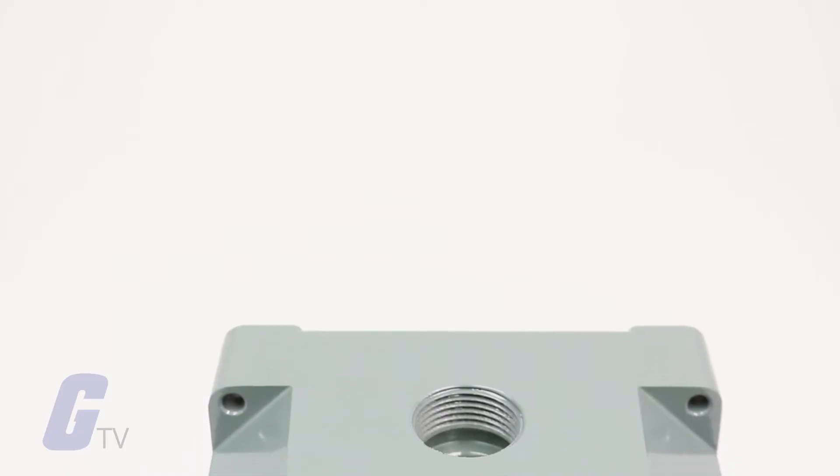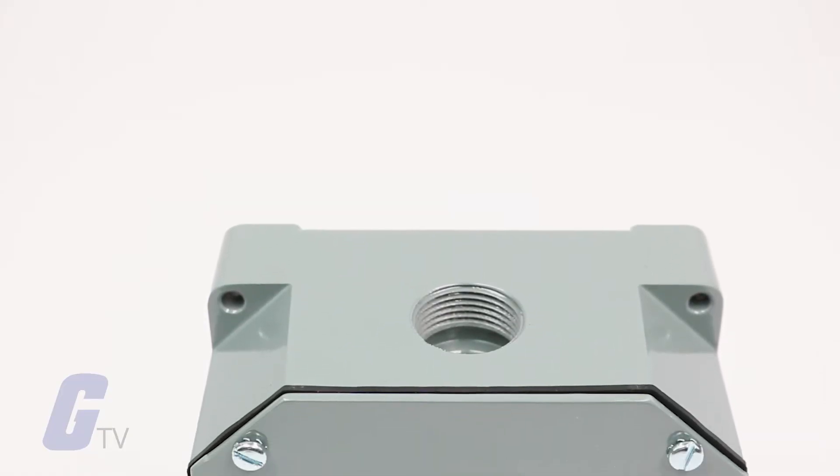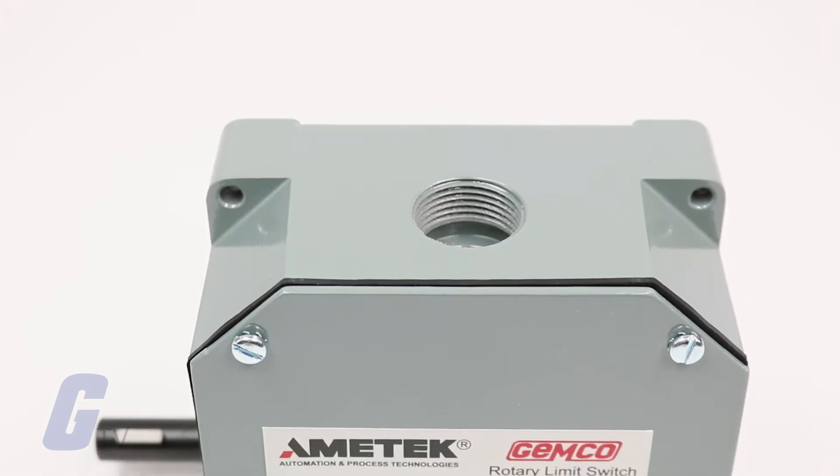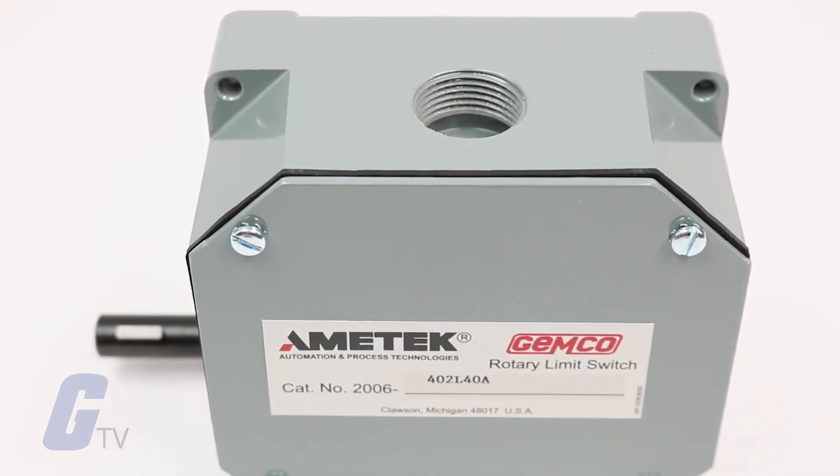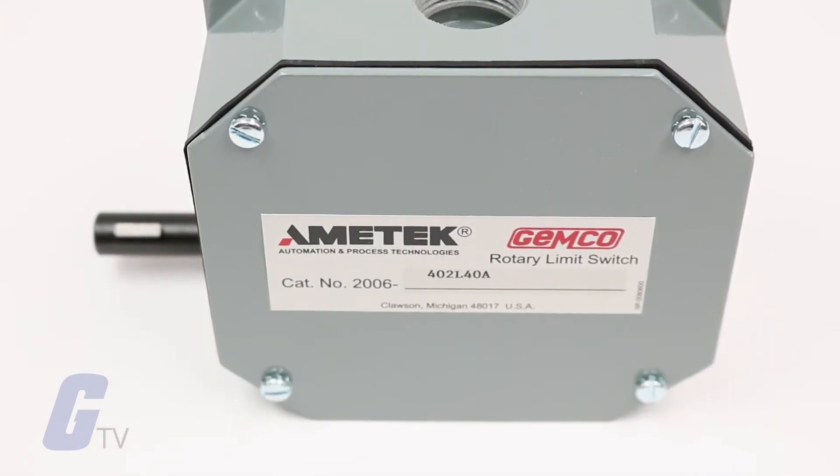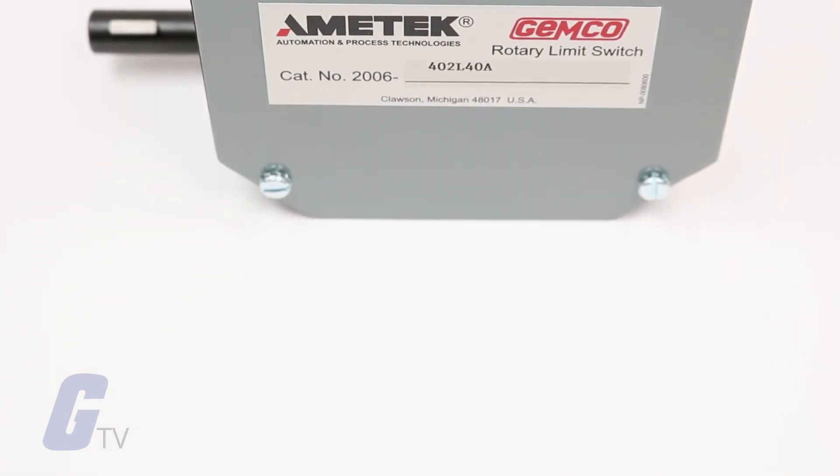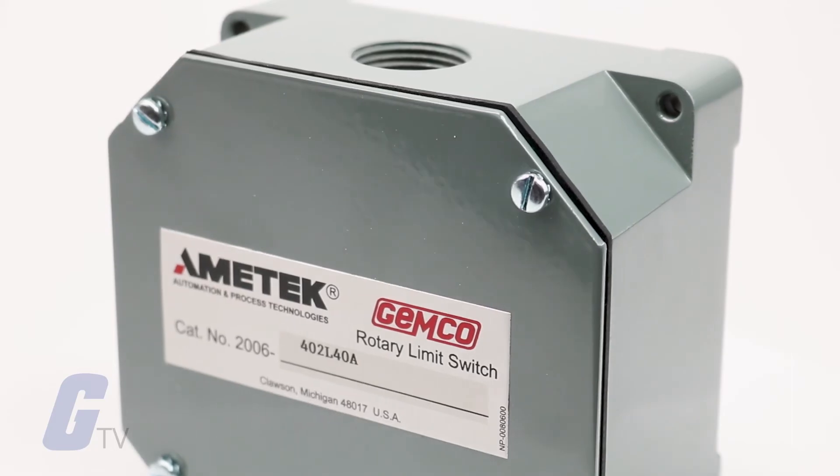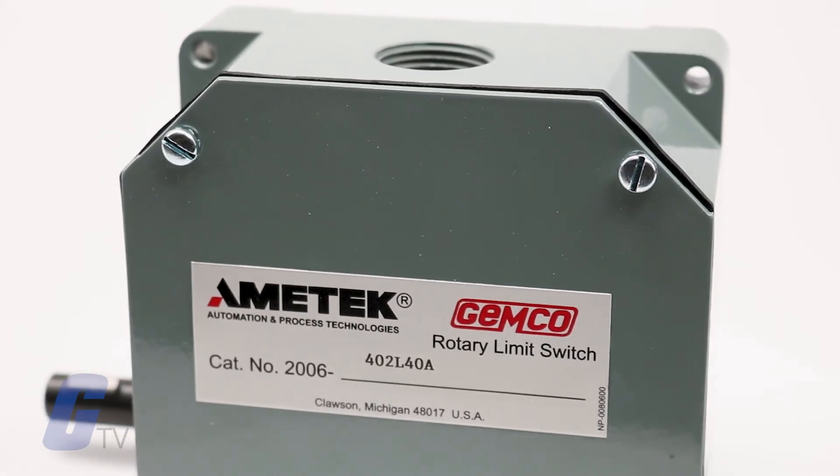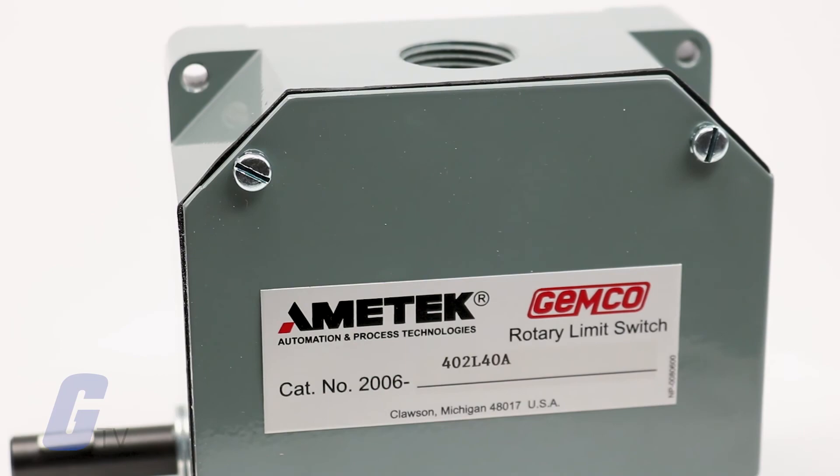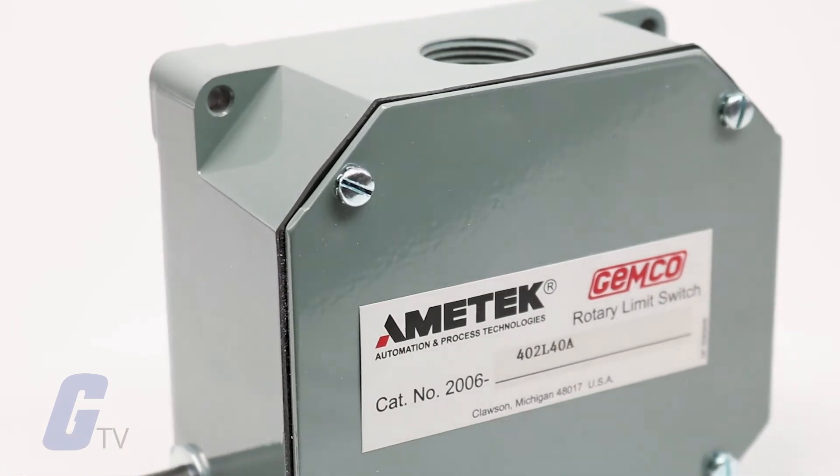The 2006 series is primarily used for hoist, elevating jack mechanisms, packaging machinery, material handling equipment, conveyors, door operators, and rotary operators where motion is expressed in shaft rotation. For more on Jemco's 2006 series rotary limit switches, please visit galco.com.